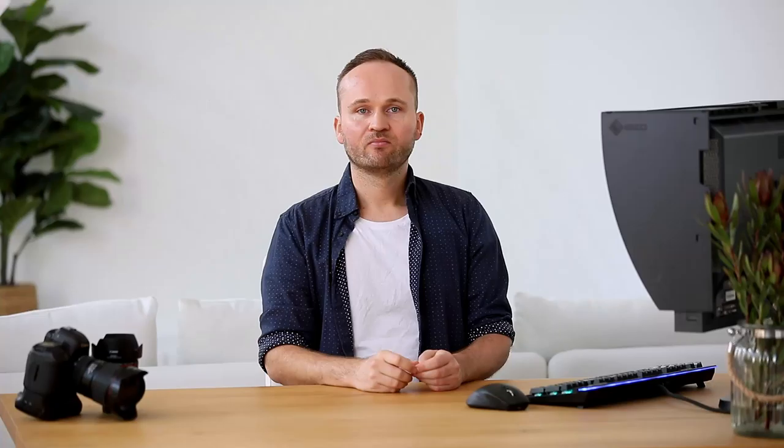Shooting in RAW also future-proofs your files. A JPEG is not a lossless file format — every time you save a JPEG, it loses some quality because it's a compressed format. With RAW, that doesn't happen, and you can take advantage of software advancements in the future. When a better RAW converter comes out, you can open your old RAW file and extract more data, more detail, and nicer colors. With RAW you'll be able to get nicer images in the future, whereas with JPEG you're stuck with a file that's actually degrading in quality.